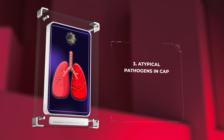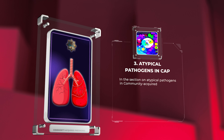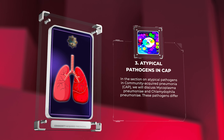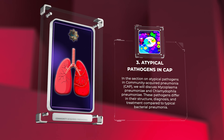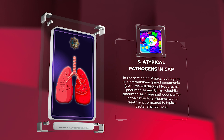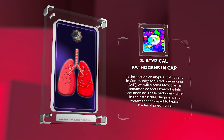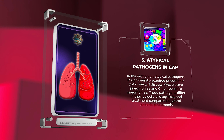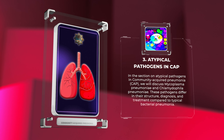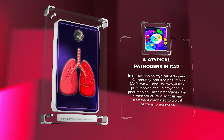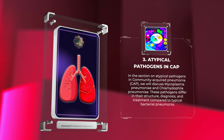In the section on atypical pathogens and community-acquired pneumonia, CAP, we will discuss Mycoplasma pneumoniae and Chlamydophila pneumoniae. These pathogens differ in their structure, diagnosis, and treatment compared to typical bacterial pneumonia.